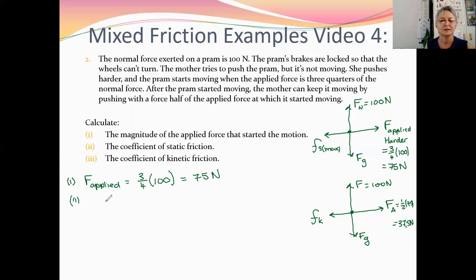The second one, the coefficient of static friction, μs, would be the ratio of the maximum static friction to the normal force. For the sake of space, I'm working along the horizontal line here. So Fs max would be the same as the applied force when the object starts moving. So it's 75 newtons divided by 100 newtons of the normal force, that's 0.75.